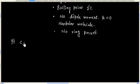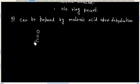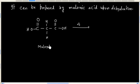Now it can be prepared by malonic acid upon dehydration. This molecule is malonic acid. If this is heated, it will lose 2 molecules of water and it will form carbon suboxide.